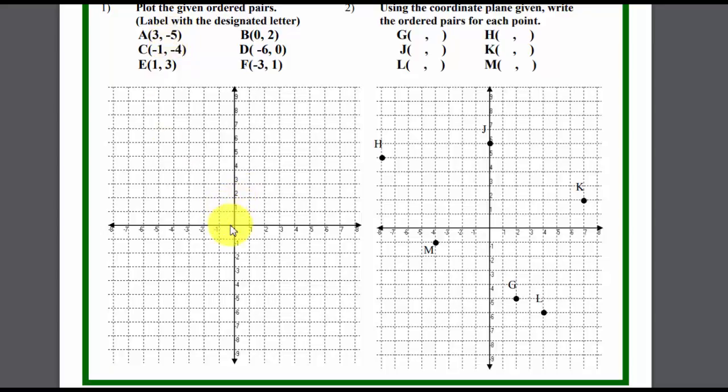So what that person is going to have to do is go over 3 for X and go down negative 5 and put the dot in the right spot. They will do that for A through F.